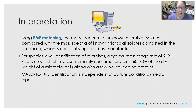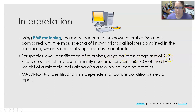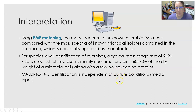For interpretation, using PMF matching, the mass spectrum of an unknown microbial isolate is compared with the mass spectra of known microbial isolates contained in the database, which is constantly updated by manufacturers. For species-level identification of microbes, a typical mass-to-charge ratio range of 2 to 20 kilodaltons is used, which represents mainly ribosomal proteins — 60 to 70 percent of the dry weight of a microbial cell — along with a few housekeeping proteins. MALDI-TOF identification is independent of culture conditions, so it doesn't matter what type of media the bacteria was grown on.